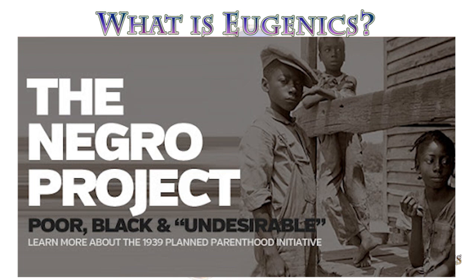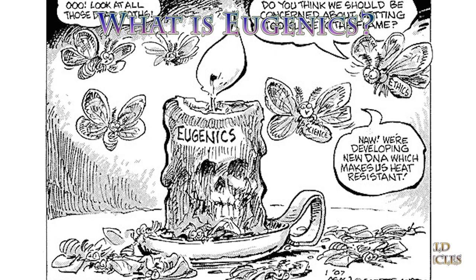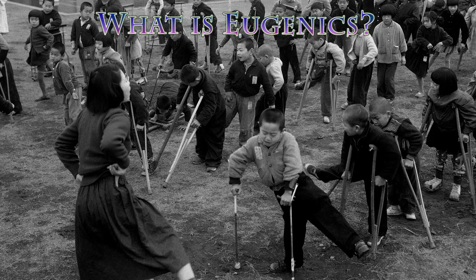One of the key components of eugenics is the loss of genetic diversity. We have to understand that as a species, it has been the diversity of mankind that has been its strength. It allows us to develop traits physically and mentally to cope with the various conditions that the planet around us gives us.